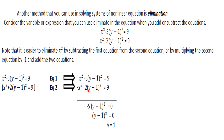In this process, I multiply both sides of the second equation by negative 1. So negative 1 times x squared is negative x squared. Negative 1 times 2 is negative 2. And negative 1 times 9 is negative 9. Then we simply add the equations.